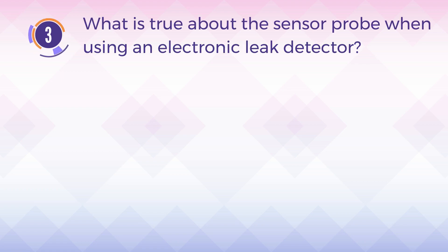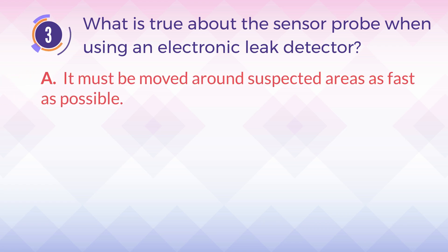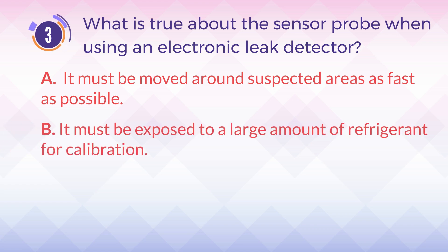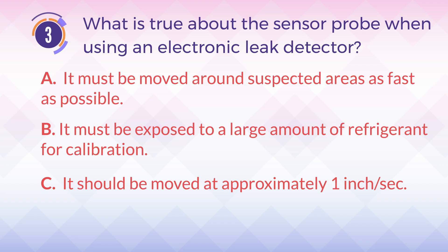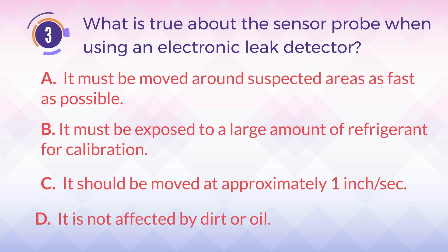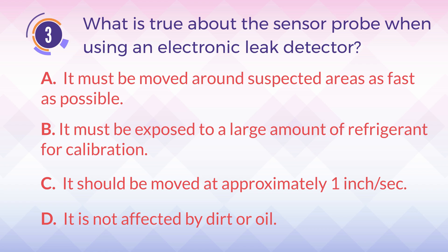Number 3. What is true about the sensor probe when using an electronic leak detector? A. It must be moved around suspected areas as fast as possible. B. It must be exposed to a large amount of refrigerant for calibration. C. It should be moved at approximately 1 inch per second. D. It is not affected by dirt or oil.